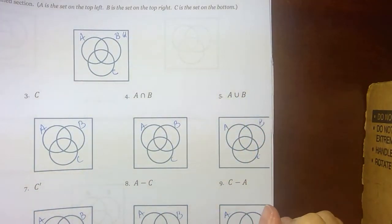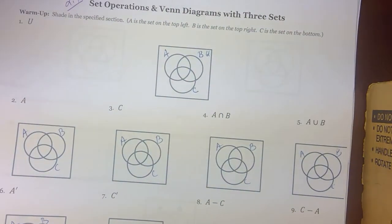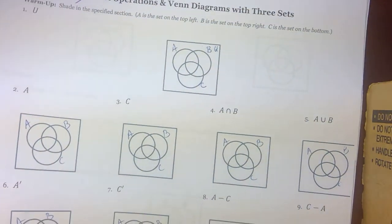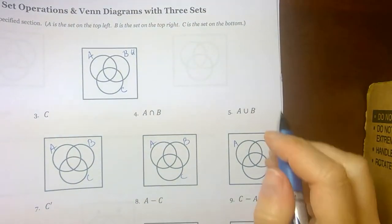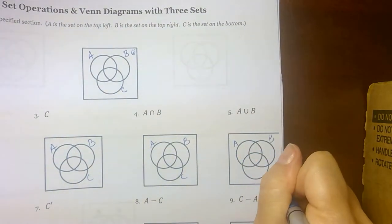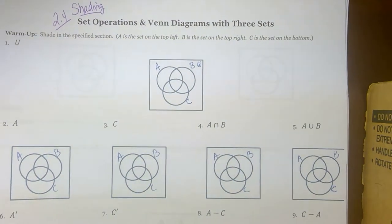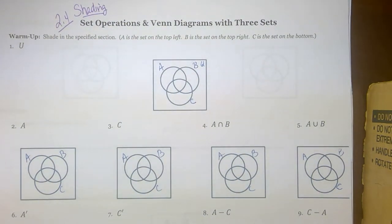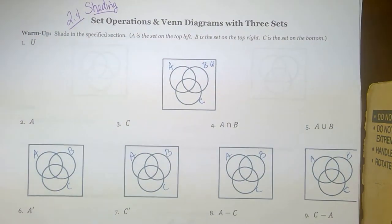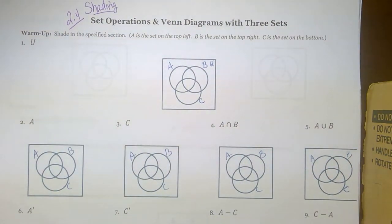My universal set is the box, and my sets are A, B, and C for each of these. When we go through the other packet, we're going to label our regions.